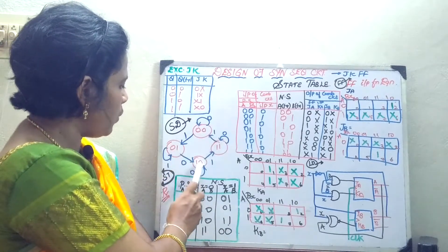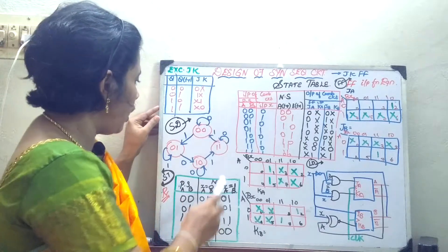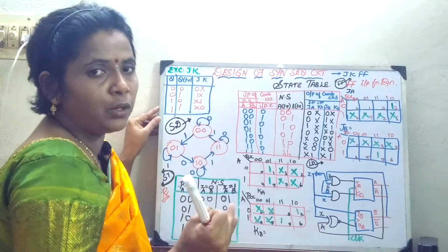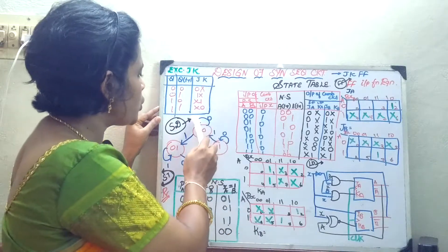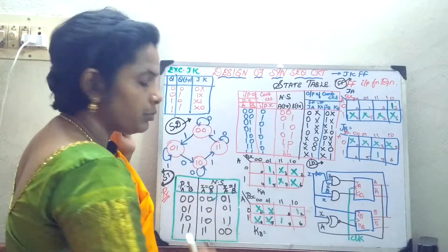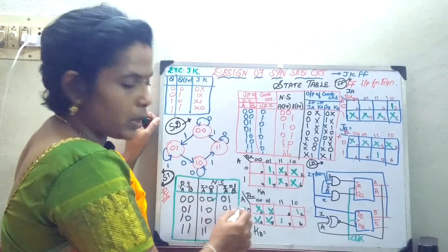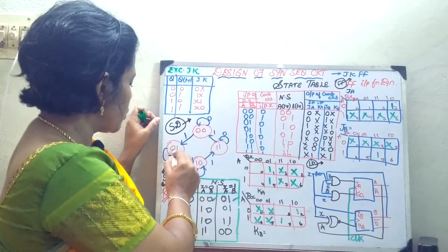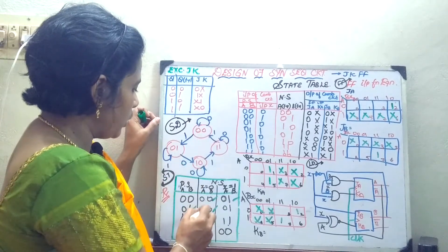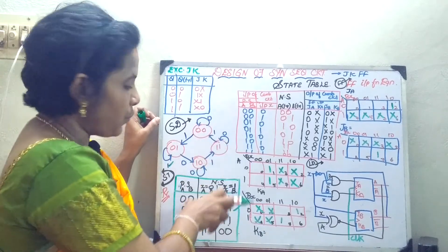Four states are there: 00, 01, 10, and 11 written as the present state. From the diagram, you draw the next state. So 00 goes to itself at x=0, and 00 goes to 01 at x=1. Next, for state 01, first take the condition at x=0: 01 goes to 10 when the input is 0, then 01 goes to itself when the input is 1. In this fashion you fill the table.